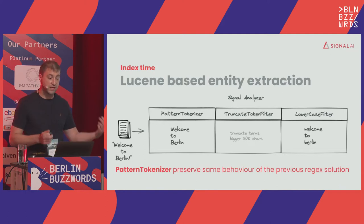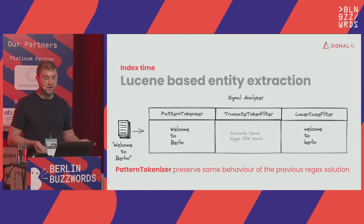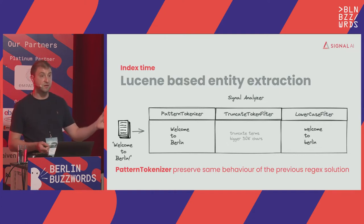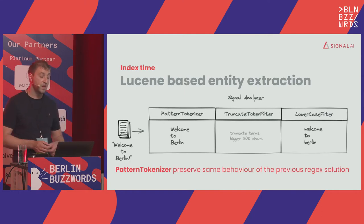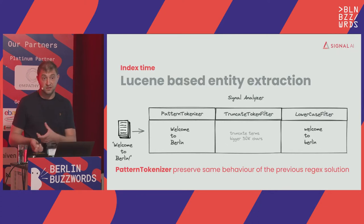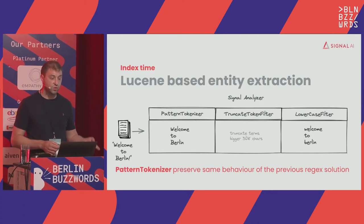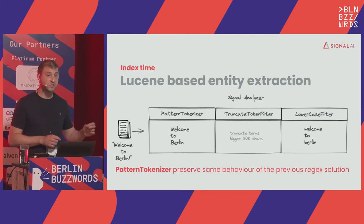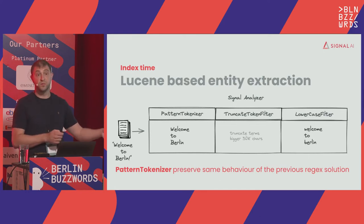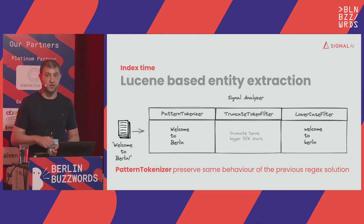At index time, we created our own custom Signal analyzer, which is not that complicated. It uses a pattern tokenizer and then a bunch of filters — a truncate filter and a lowercase filter. The primary reason for using a pattern tokenizer over a standard tokenizer is that we wanted to apply a regex that would preserve the same behavior the original regular expression had, preserving the user experience.